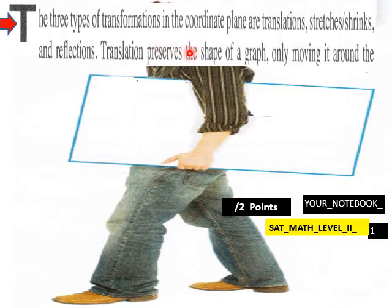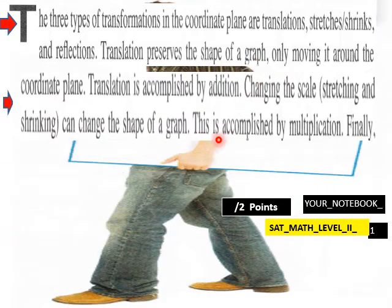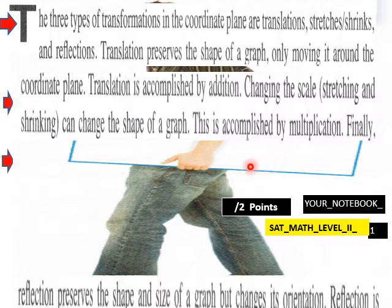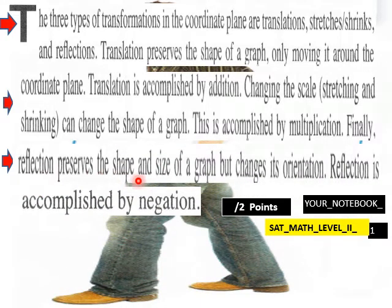The three types of transformations in the coordinate plane are translations, stretches and shrinks, and reflections. Translation preserves the shape of a graph, only moving it around the coordinate plane — accomplished by addition. Changing the scale, meaning stretching and shrinking, can change the shape of a graph — accomplished by multiplication. Reflection preserves the shape and size of a graph but changes its orientation — accomplished by negation.